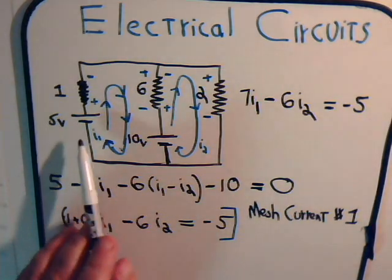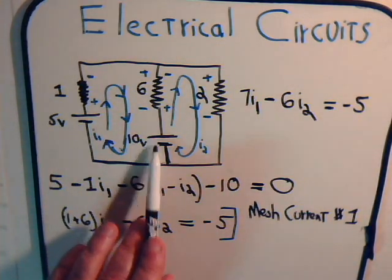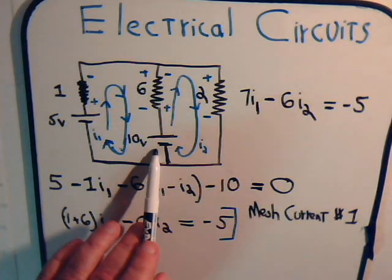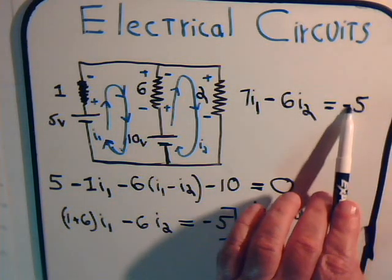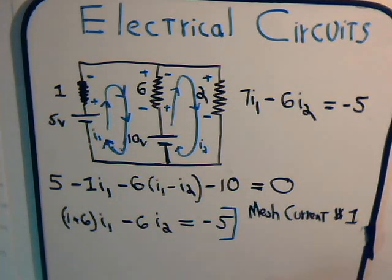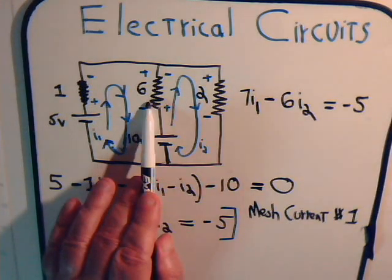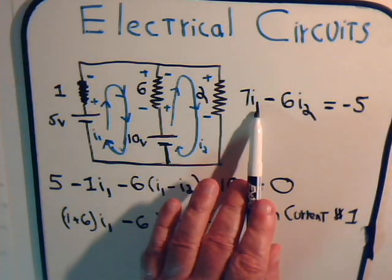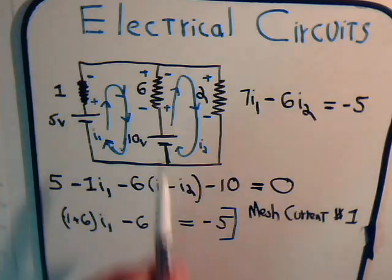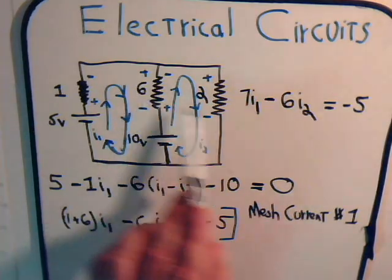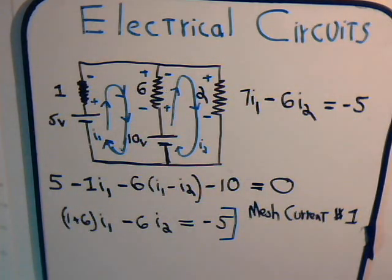So, what we do is this. First, look to see if you have constant voltage sources. Add them up. This is plus 5, this is minus 10, so it's minus 5. It goes on this side of the equation with a minus 5 before it. Then, look at the resistors that I1 flows through. Goes through this one, goes through this one, that adds up to 7. 7 times I1. In this resistor, which is shared with I2, then we say minus 6 times I2. And that is mesh current number 1.